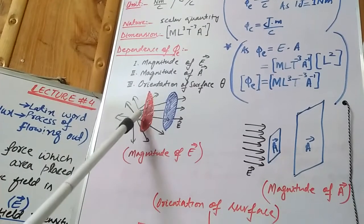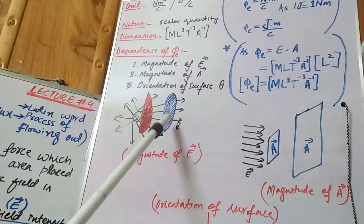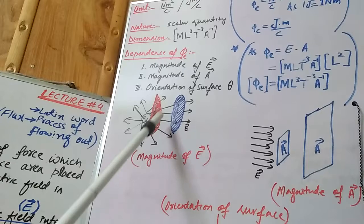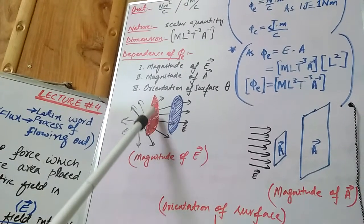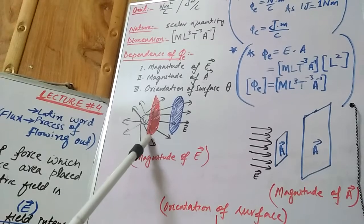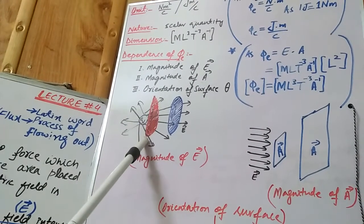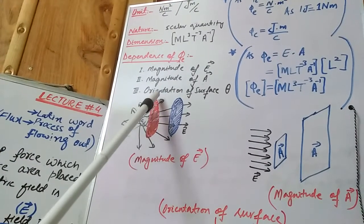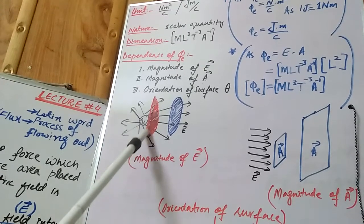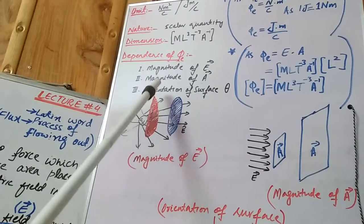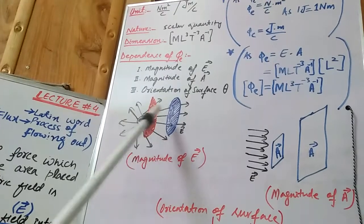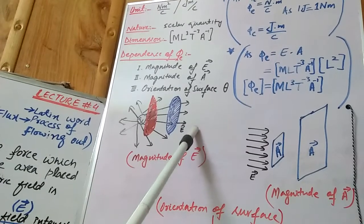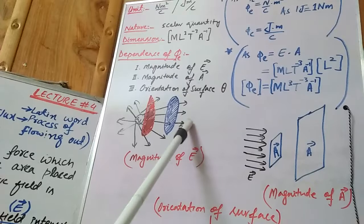Where will electric flux be maximum? In the case of the red surface near the charge, electric flux will be maximum because the electric field intensity is stronger there, and the maximum number of electric field lines cross the red surface. In the case of the blue surface farther away, fewer lines of force cross it, so electric flux is minimum.